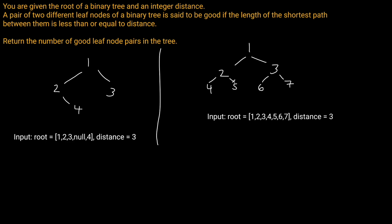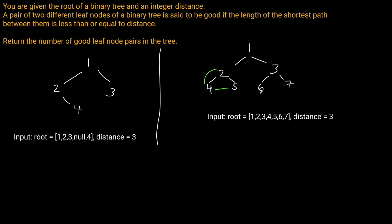What's the distance from 4 to the other leaves? To get from 4 to 5 is going to be a hop of 1, and then 2. So that's less than our distance of 3, so that means that we have 1 good leaf pair so far. What about the distance from 4 to 6? That's a distance of 1, 2, 3, 4 to the 6. So 4 and 6 are not good leaf pairs because the distance between them is 4, which is more than our distance of 3. What about 4 and 7? That's also a distance of 4, so that doesn't work.